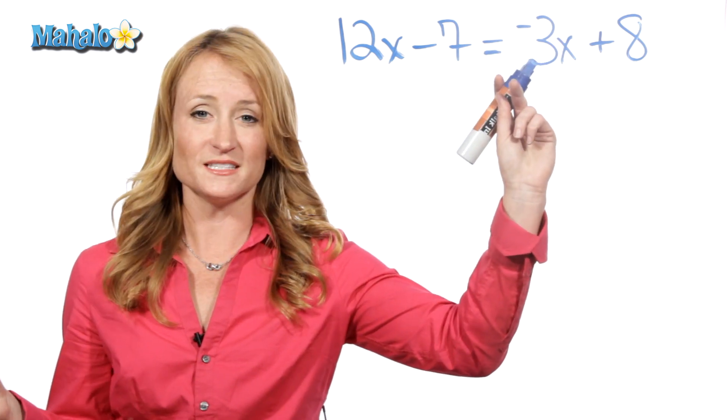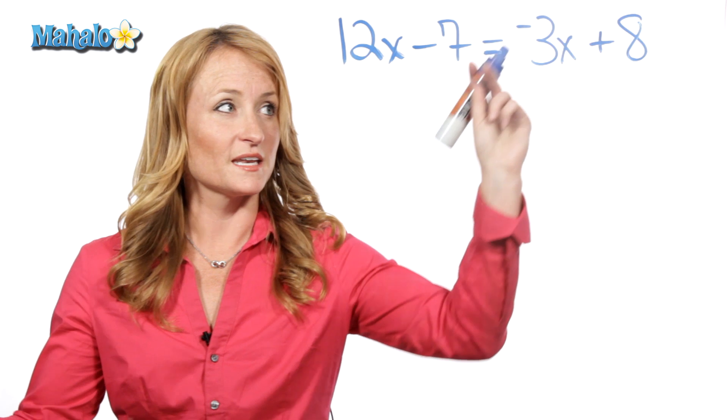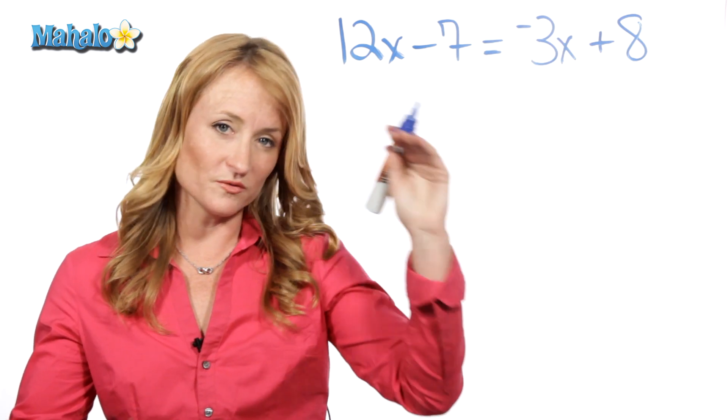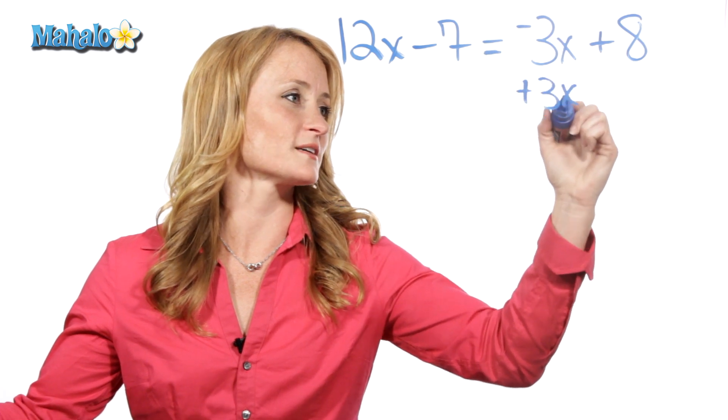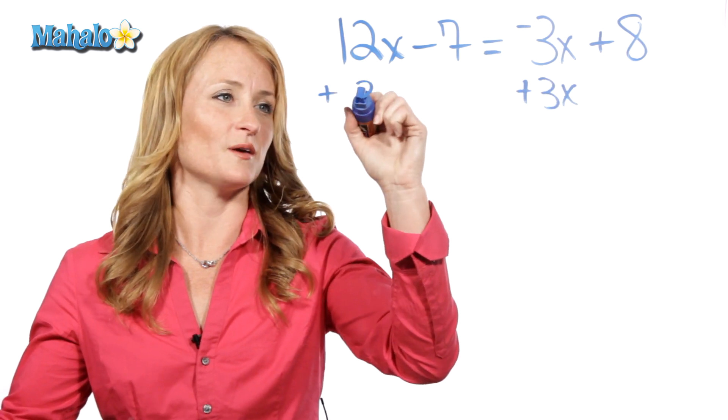Let's start by moving these three x's over here. Now, it's negative 3x, so in order to move them to the other side, we have to do the opposite, which means we're going to add 3x. What you do to one side, you have to do to the other.